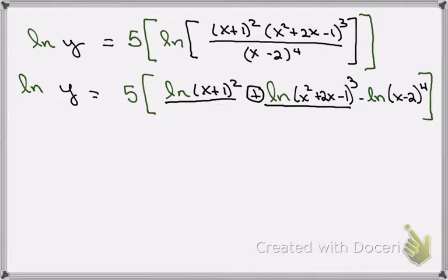Then that last term we get is minus the natural log of (x-2) to the 4th power. Notice that was negative because that term was in the denominator, so it was divided.